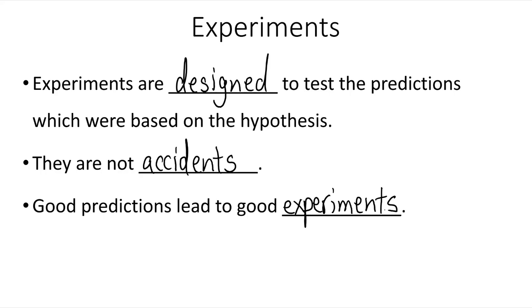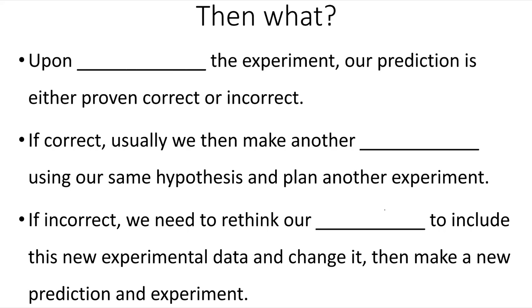You've conducted your experiment, then what? Upon completing the experiment, our prediction is either proven correct or incorrect. If we're correct, usually we then make another prediction using our same hypothesis and plan another experiment. However, if our prediction is incorrect, we need to rethink our hypothesis.